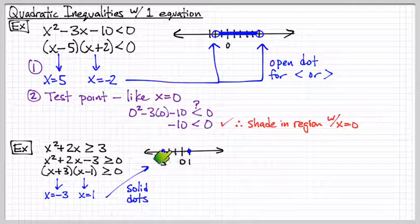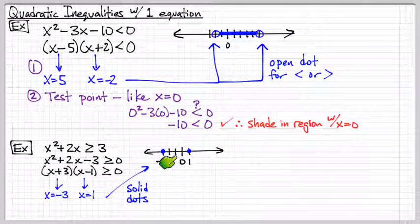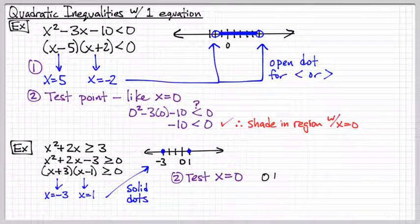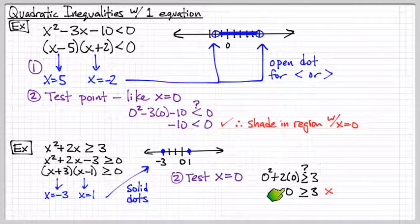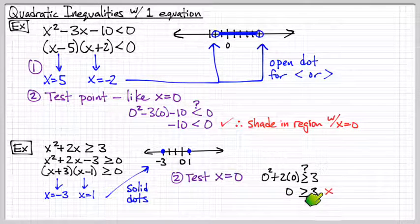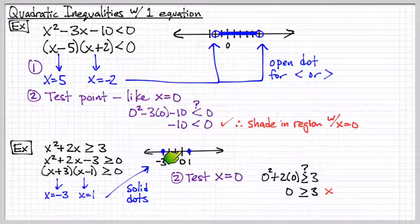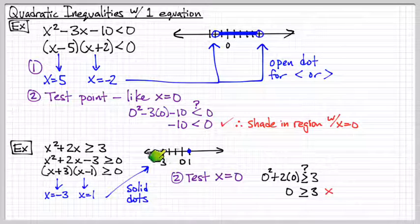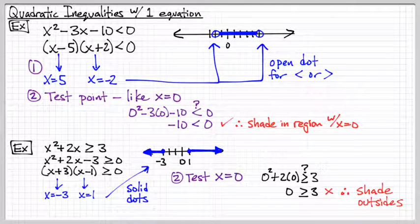Now again, do we shade on the inside or do we shade on either of these sides here? Let's use a good test point of zero again. So when we plug in zero, we're asked the question, is zero greater than three? No, it's not. So zero, x is equal to zero, is not a solution to this expression. So we don't want to shade on the inside. Instead, we're going to shade on the outside. And this is our solution.